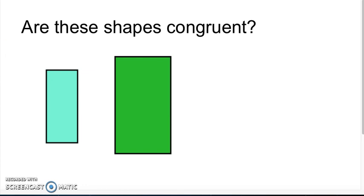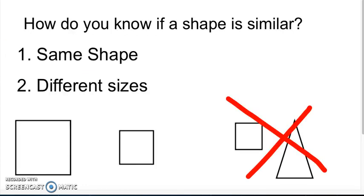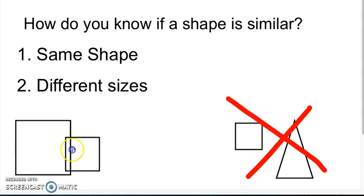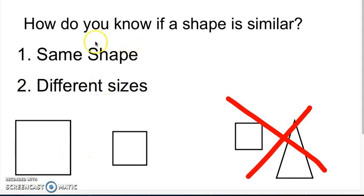Now that we understand congruent shapes, we need to learn about similar shapes. How do you know if a shape is similar? If the two figures are the same shape and size, they're congruent. However, similar shapes don't have to be the same size. As you can see here, these two squares are the same shape but their side lengths are obviously different. This square is definitely bigger than this square, but they are both the same shape, so they're similar. Over here, these shapes are not similar because one is a square and one is a triangle.